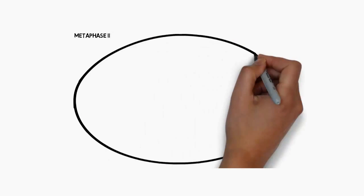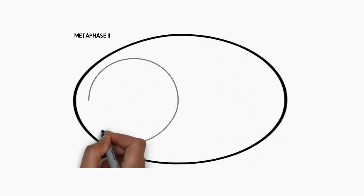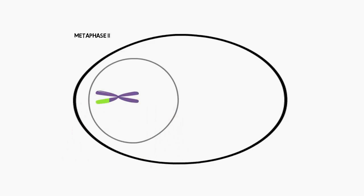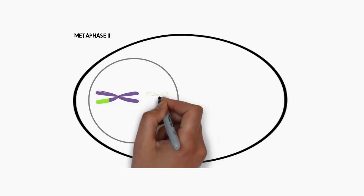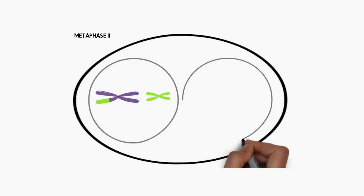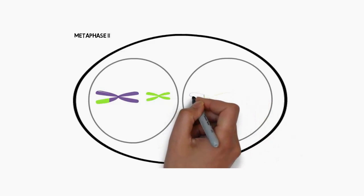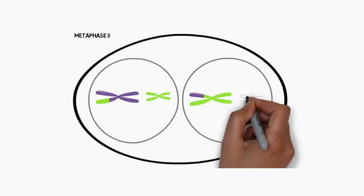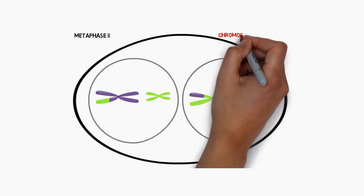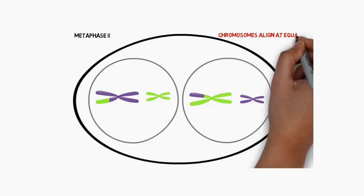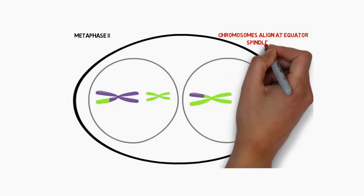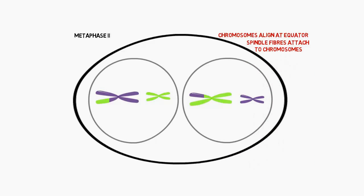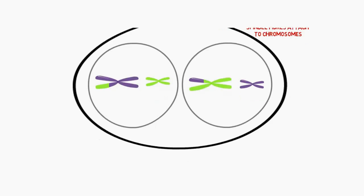After telophase one we move into metaphase two — the second division. We can see our chromosomes in the two nuclear membranes starting to align. They align from top to bottom, as that is the direction cell division will occur. The chromosomes align at the equator again, just as they did in the first meiotic division. The spindle fibres attach to the chromosomes and will draw them apart in the next phase.